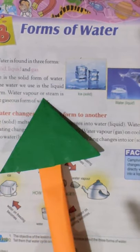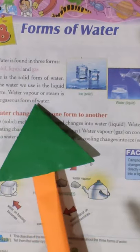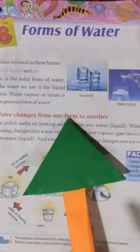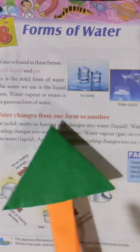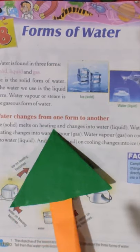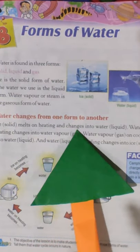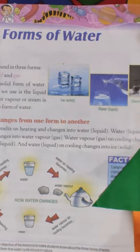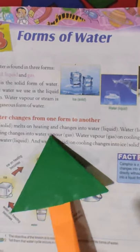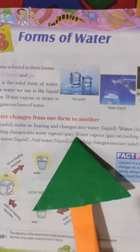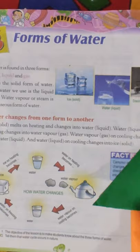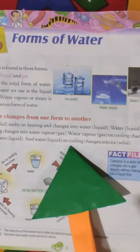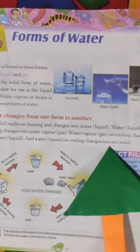Water vapor or steam is the gaseous form of water. Water changes from one form to another. Ice melts on heating and changes into water. Water on heating changes into water vapor. Water vapor on cooling changes into water, and water on cooling changes into ice.